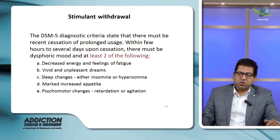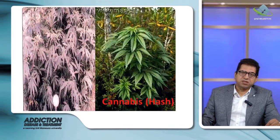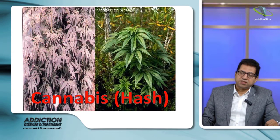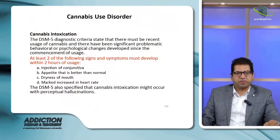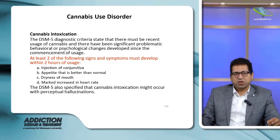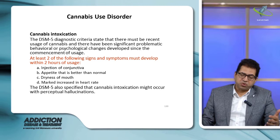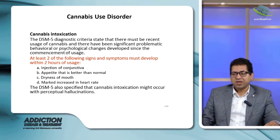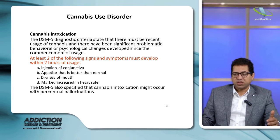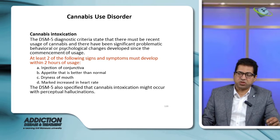Cannabis, hashish, and marijuana are different forms of drugs with the same substance use effect. Intoxication is characterized by two or more of the following symptoms occurring within two hours of use: redness of the conjunctiva, increased appetite, dry mouth, and increased heart rate. Cannabis intoxication can sometimes lead to perceptual hallucinations.